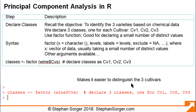We recall our objective with this dataset as identifying the three cultivars, or varieties, based on the chemical data. To make it easier to distinguish the three cultivars, we will declare three classes — one for each cultivar: CV1, CV2, and CV3. To do so, we use the factor function in R, which is good for declaring a small number of distinct values. The line of code shows the factor function being used against the CVS variable in the wine dataset, and assigning the result to a variable we will call classes.